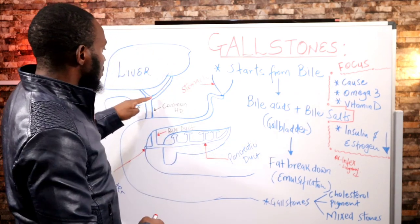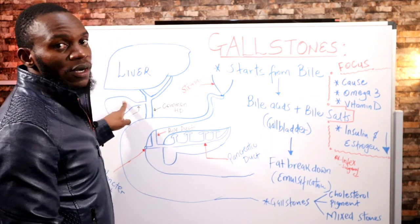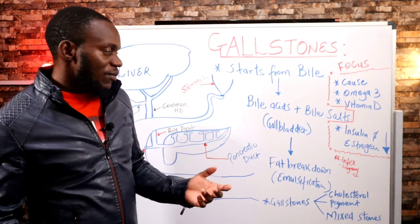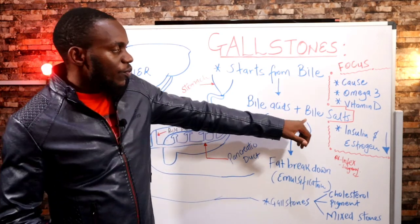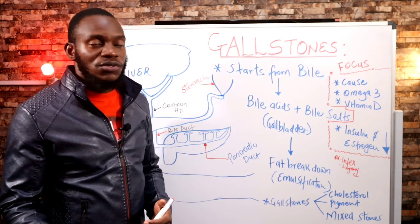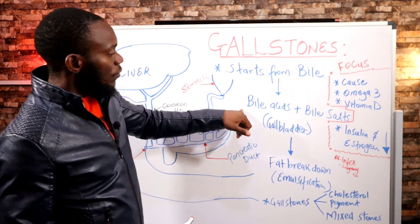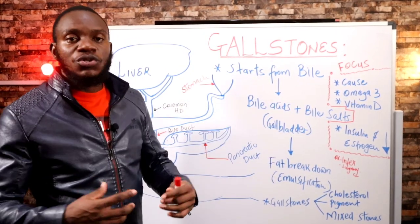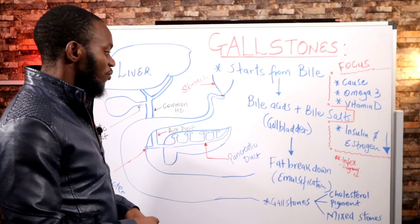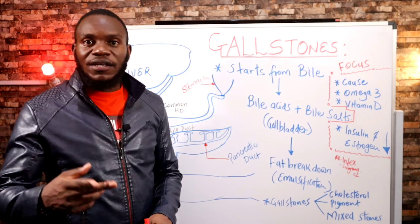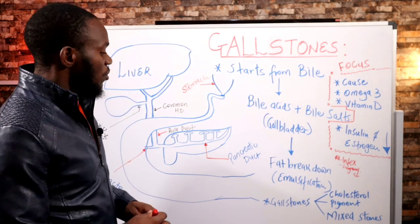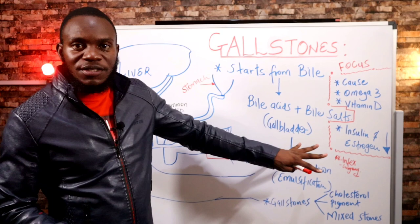The liver synthesizes bile and pumps it down into the hepatic ducts into the gallbladder through the cystic duct. Once you eat a fatty meal, bile's work is to emulsify fat in your small intestines or duodenum. The function of these bile salts and bile acids is to sequester fats in the intestines, make them soluble, and break them down into small globules that can be easily acted upon by lipases that come from the pancreas — enzymes that break down fat.